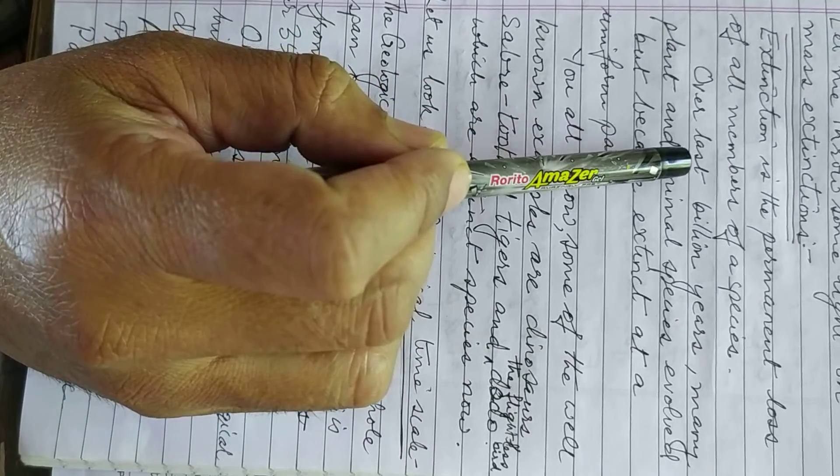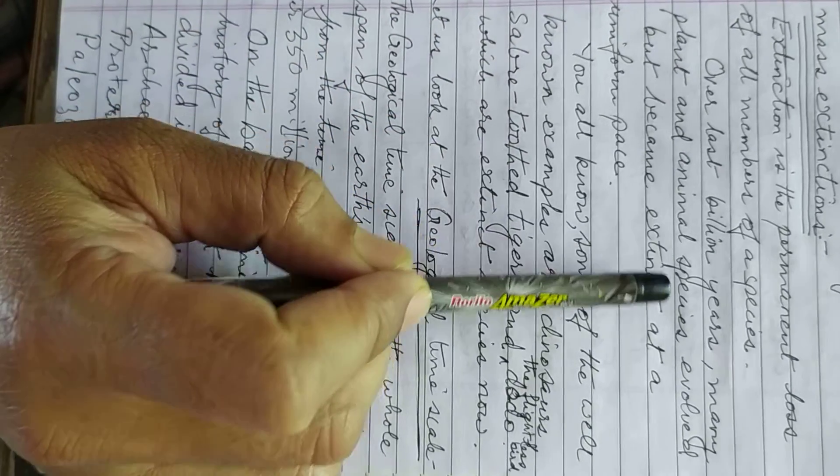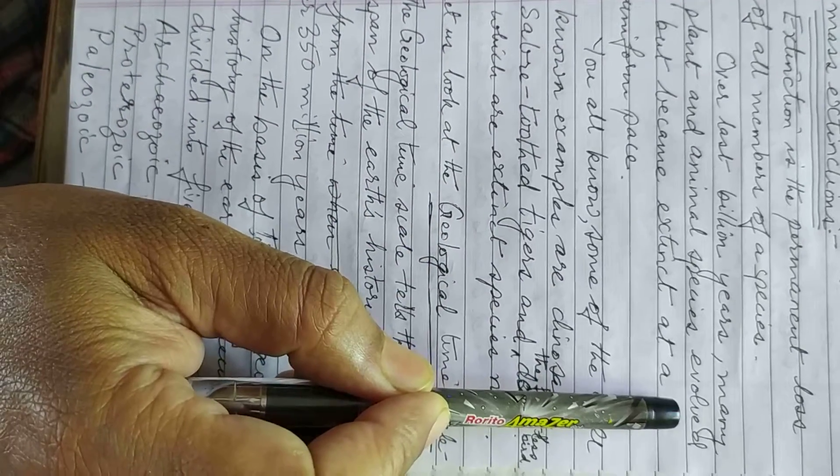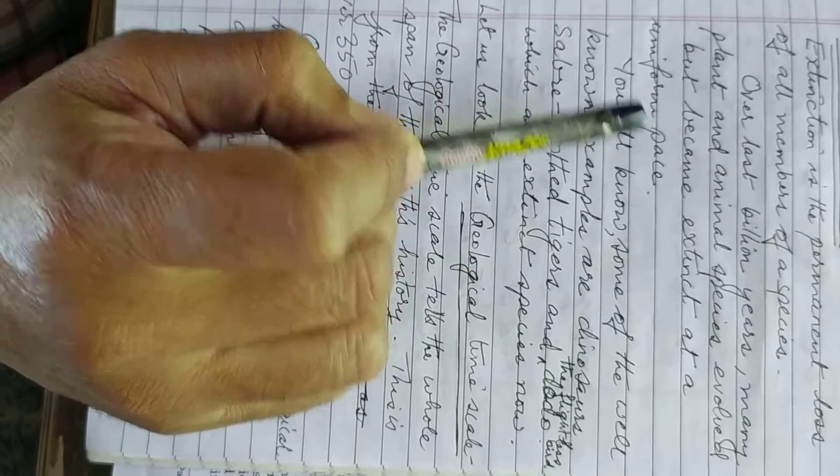Over the last billion years, many plants and animal species evolved but became extinct at a uniform pace.